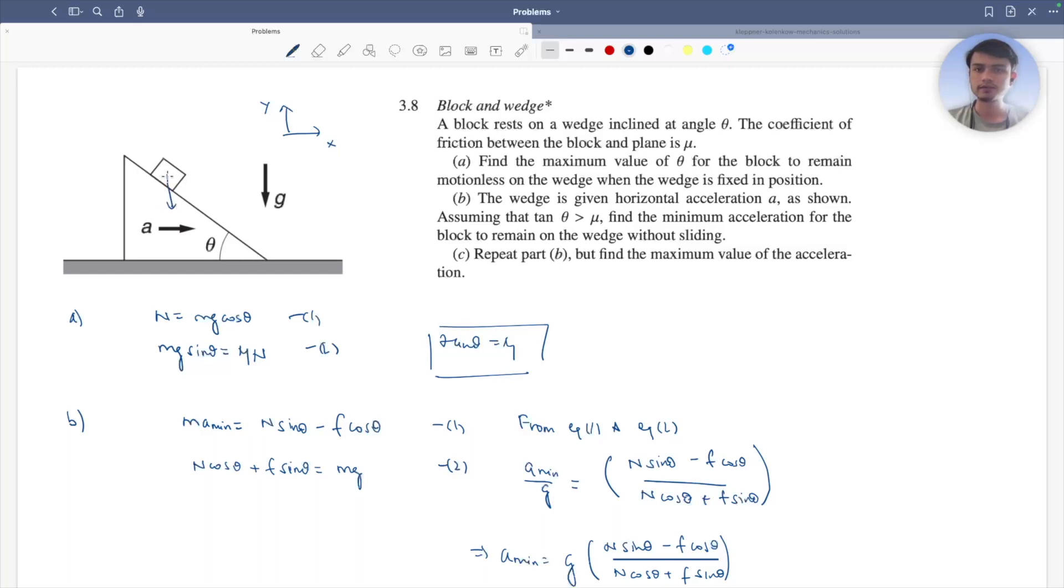So the force diagram will be, your friction will be in this direction, you have your angle theta out here, you have your angle theta out here, you have your normal out here, and you have your friction out here. This is mg.